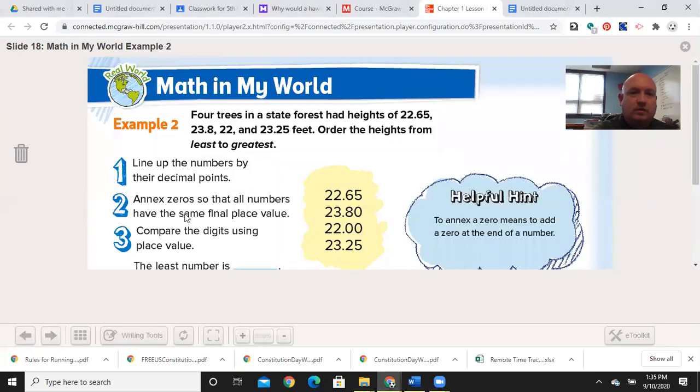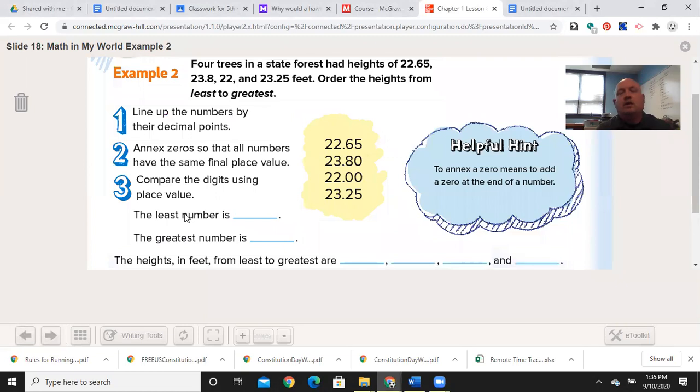You see the answer key there. Example - it's really a good idea to always look at the helpful hints. They may be something you already know but it also might be a reminder. The helpful hint: to annex a zero means to add a zero at the end of a number. Remember, you can only do that after the decimal or before the hundreds and tens in this case. You can't just throw them randomly where it changes the value of the number.